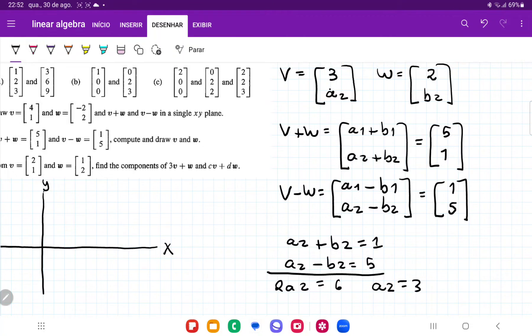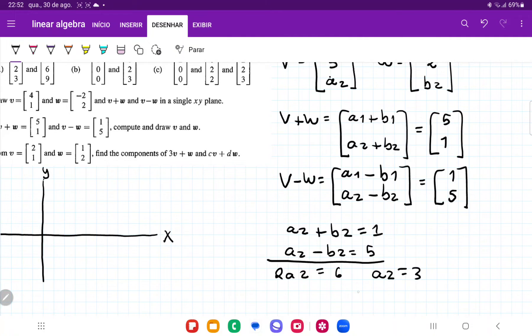And so if a2 is equal to 3, I'm going to plug in the first one. So 3 plus b2 is equal to 1. I plug this in. And then if 3 plus b2 is equal to 1, it means that b2 is equal to negative 2.